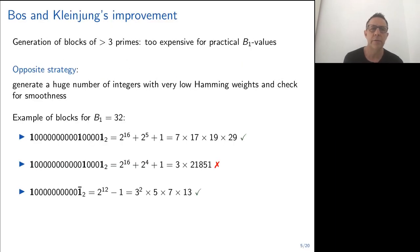Some years later, Bos and Kleinjung proposed a nice improvement. As I just said, it was just not possible to consider blocks of more than three primes. It was way too expensive for practical B1 values. So instead, they used the opposite strategy. They generated a huge number of integers with very low hamming weight because they knew that the corresponding scalar multiplication will have a small number of additions. And for those numbers, they checked for smoothness.